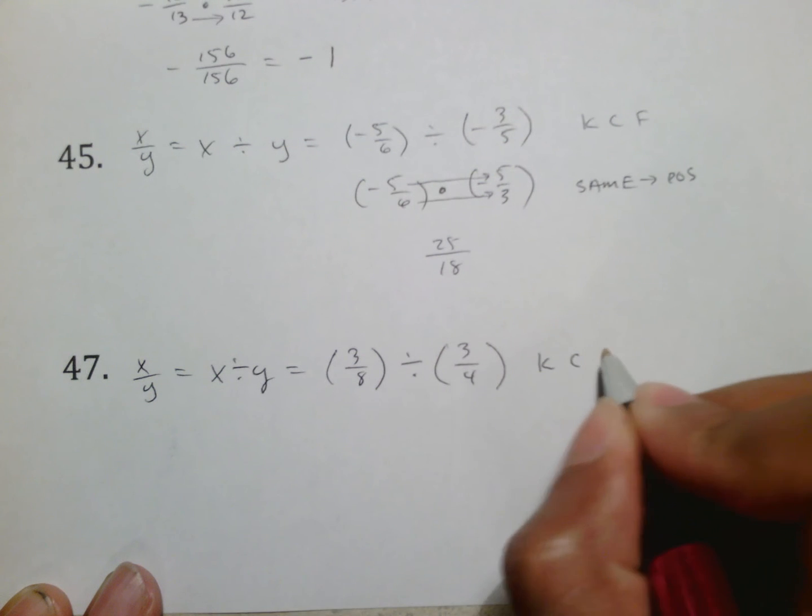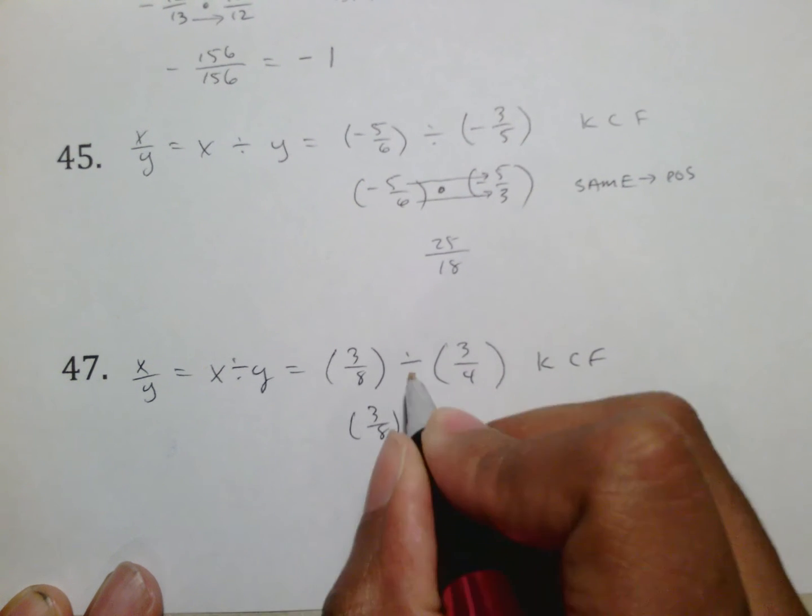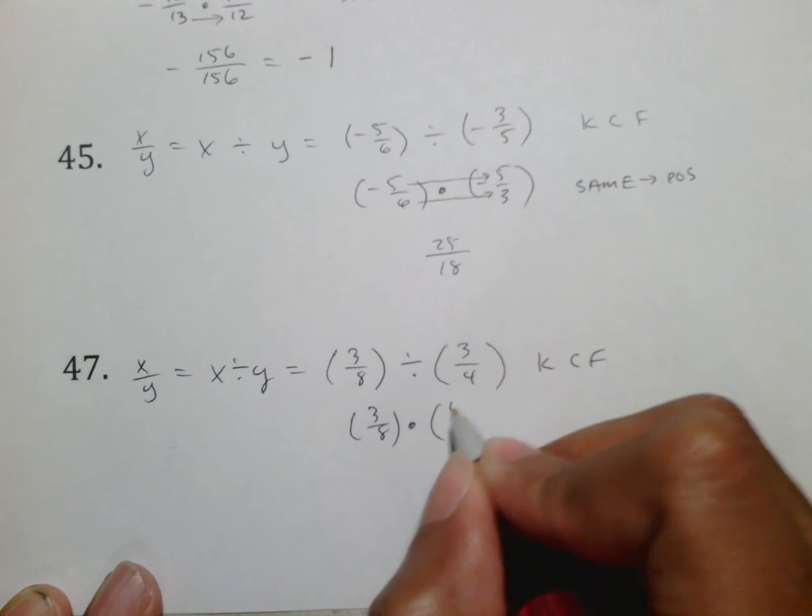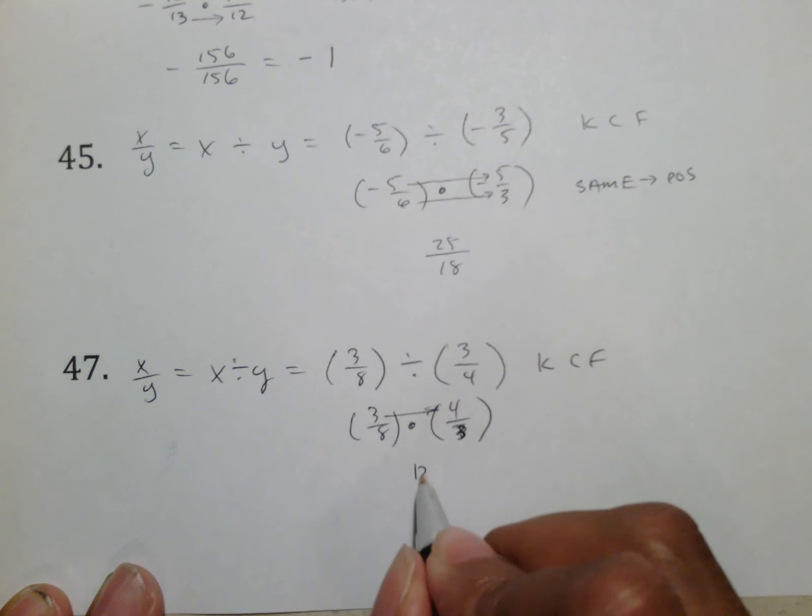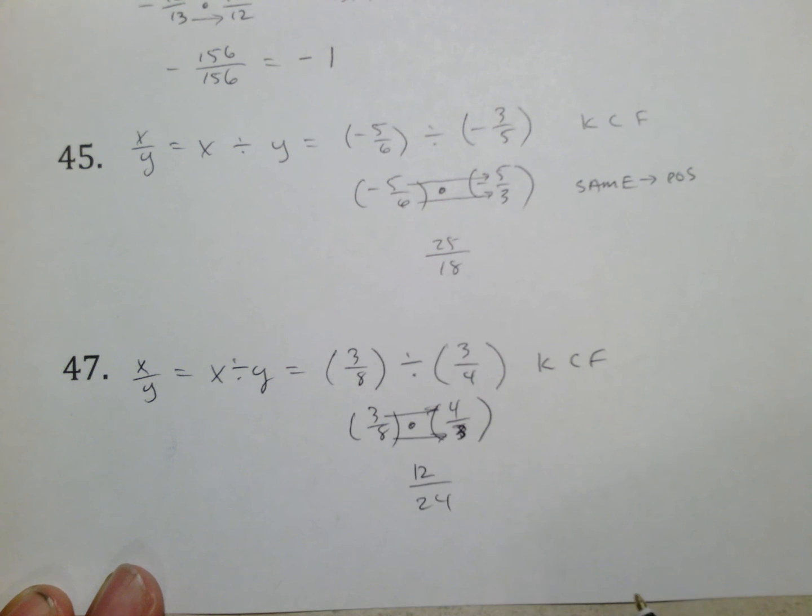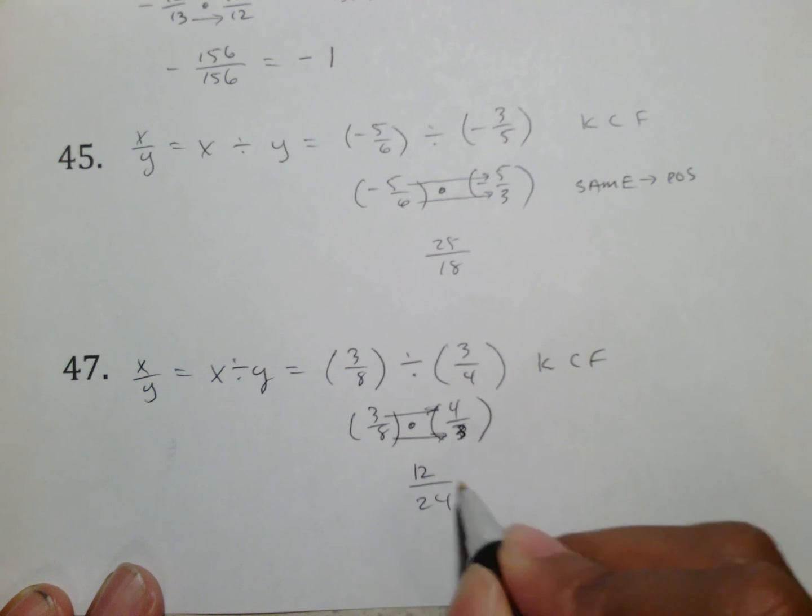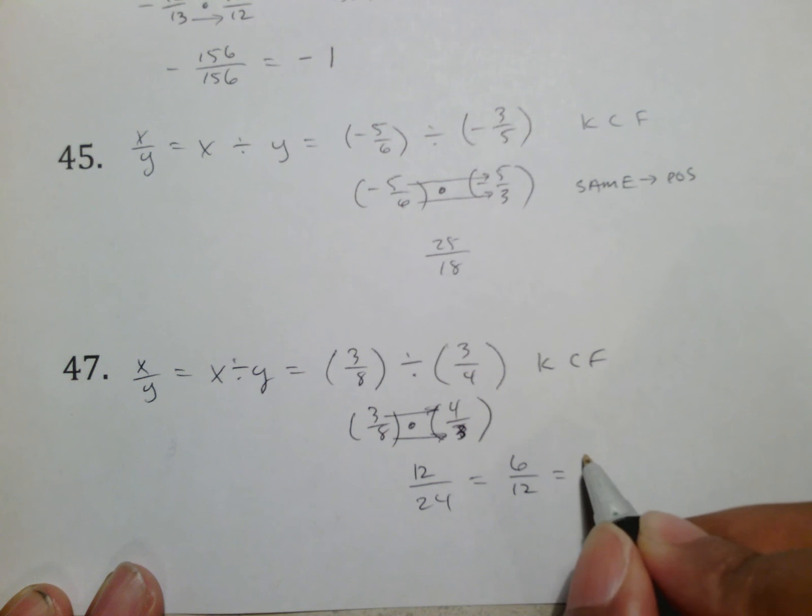This is a division, so we keep change flip, so we keep the 3 eighths the same, change that to multiplication, and flip this one over. We then, because this is multiplication, multiply straight across, we get 12 on the top, we get 24 on the bottom. There are no negatives, which means that's just our answer. And it would be positive, but we cannot stop there because 12 and 24 can both be, well, they're both even. I know that much, so I can at least divide them by 2. These are still even, so I can divide them by 2 again, 3 over 6. And these are both, well, 3 and 6 can both be divided by 3, giving me the answer of 1 half.